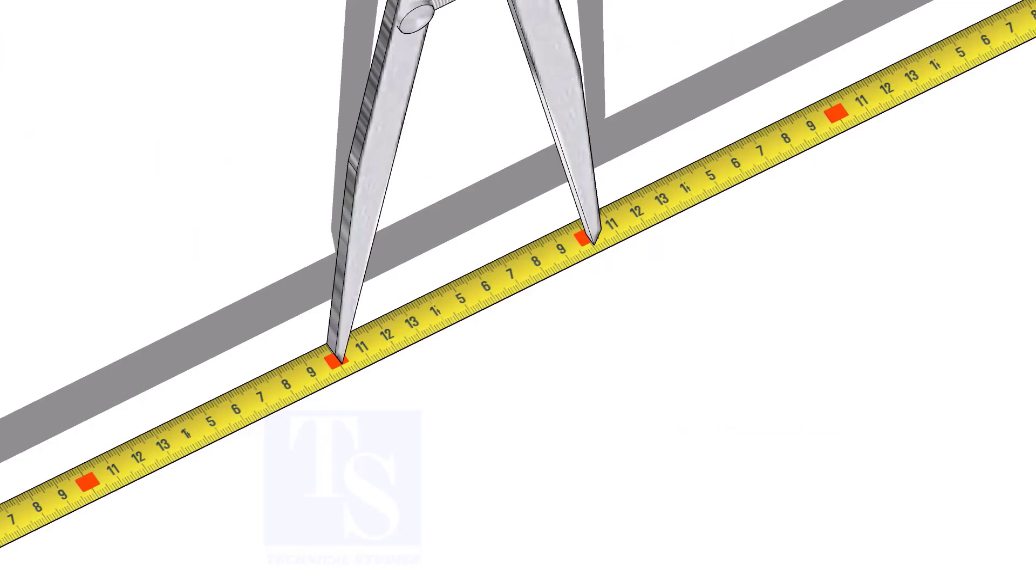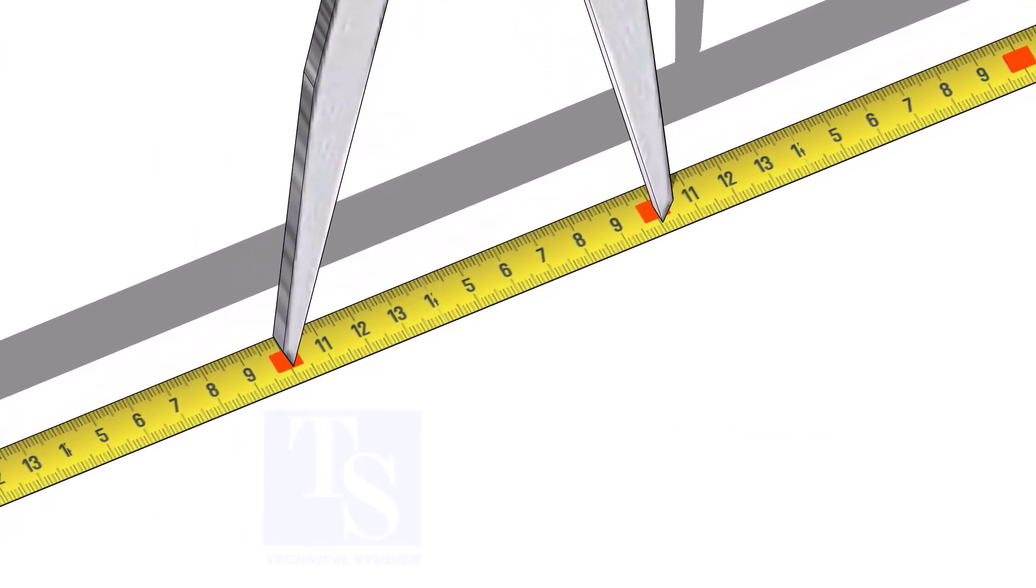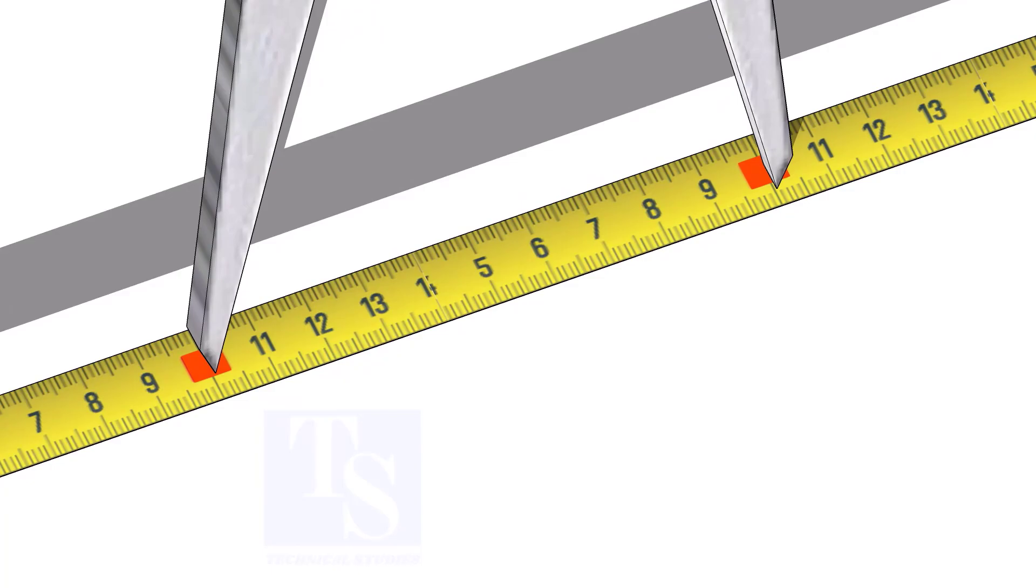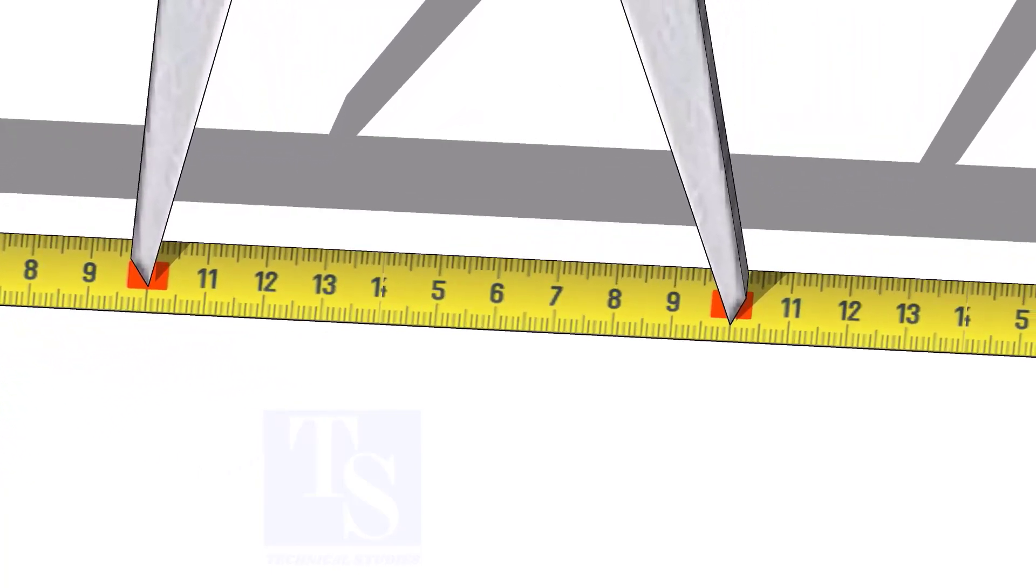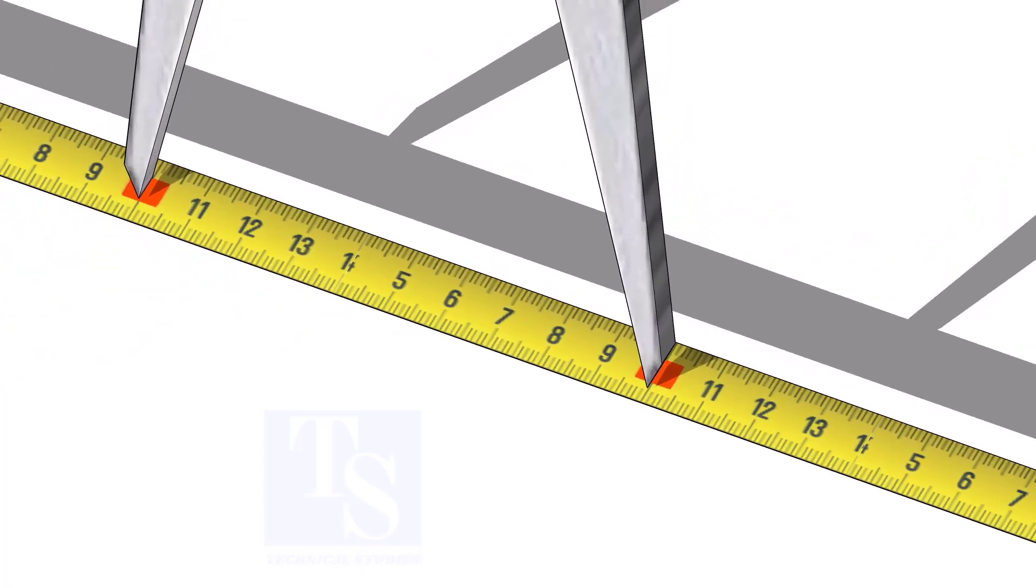Adjust the divider to 100 millimeters. Remember, this method is suitable for small diameter cones only. For large cones, you need to follow the cord length marking method.